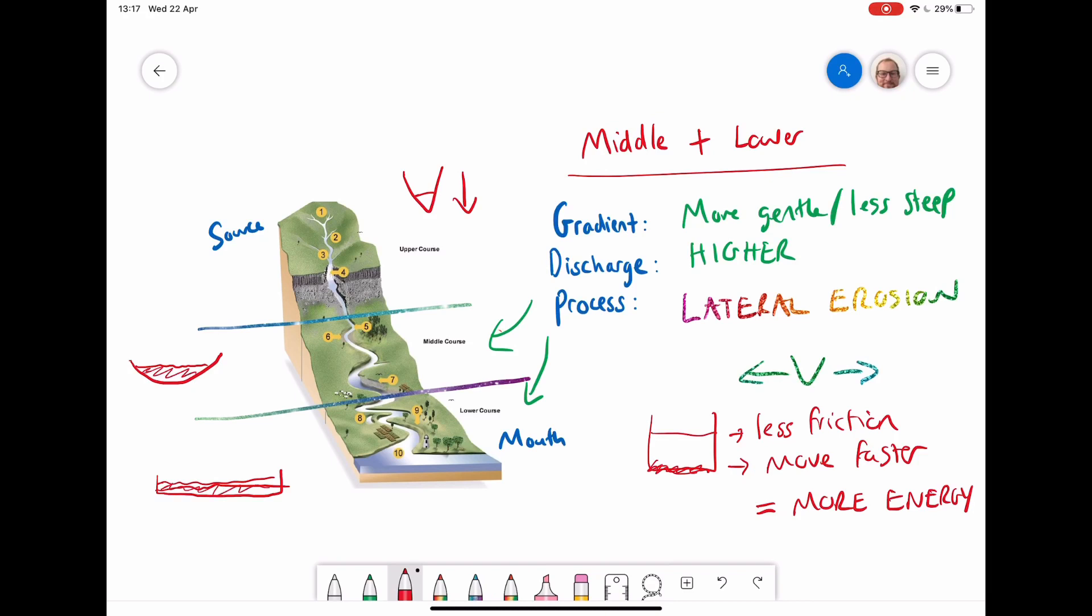And so we can see that the course of the river and the long profile of the river actually impact the processes that dominate each stage of the river course.